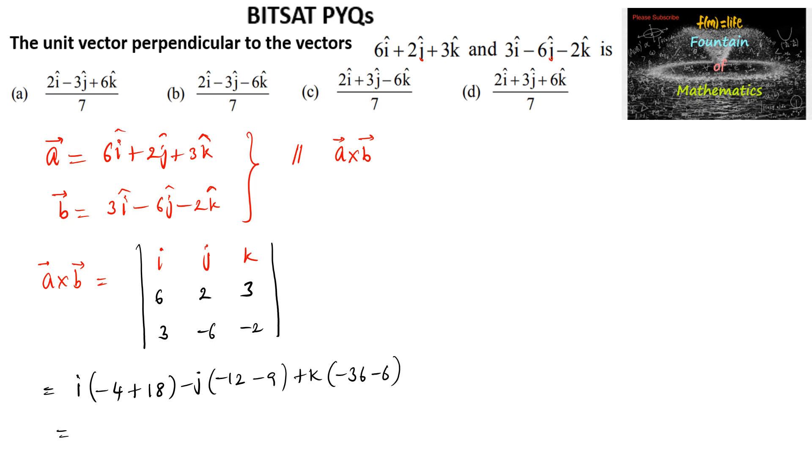So we can write 18 minus 4 is 14 times i and minus 12 minus 9 is minus 21, so plus 21j, and minus 36 minus 6 is minus 42k. So this is the a cross b vector or we can consider 7 common, 2i plus 3j minus 6k.